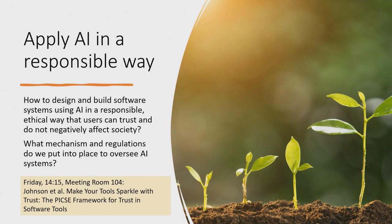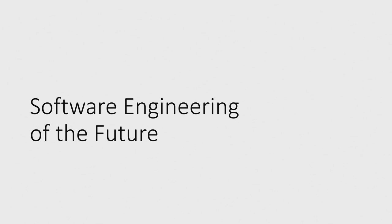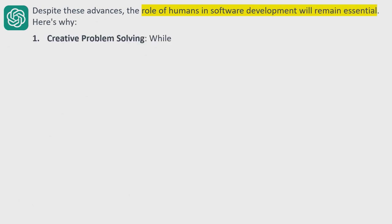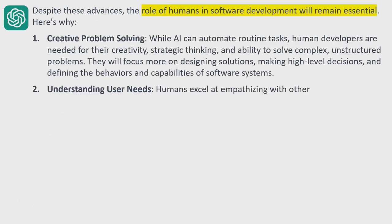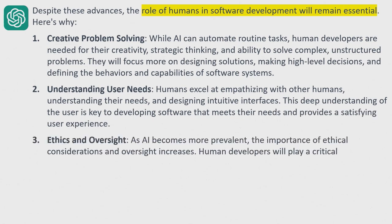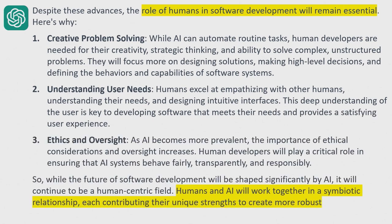We did some research on a trust framework for AI systems, which will be presented Friday afternoon. As for the future of software engineering, I asked ChatGPT: 'Do we still need software engineers in 10 years?' ChatGPT is very confident that we still need software engineers — for creative problem solving, which AI models can't do yet very well, and to understand user needs. Requirements engineering is going to get more important.